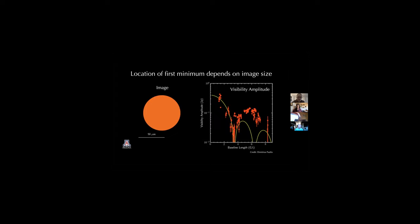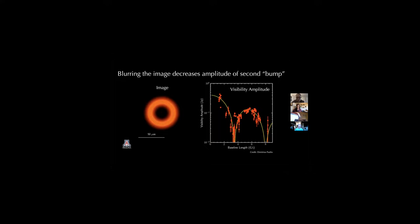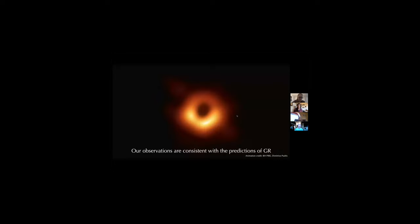Adding a flux depression to the center of the filled disk, we can get the height of the second peak pretty close. This is actually very close to the size of the ring we ended up publishing. If I blur the image just a little bit, I do a much better job. Some data points are not well-fitted because this image is too simplified — I assumed it's symmetric, which is not actually the case. Those data points tell you that you need an asymmetric image to fit the data. I hope that helps build some intuition for how very long baseline interferometry works.